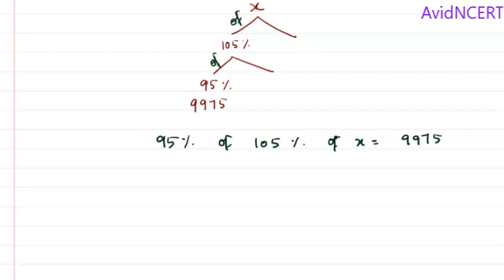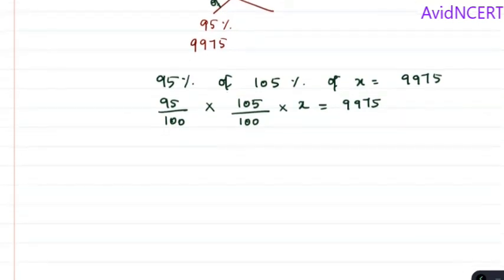So simplifying this, we need to say this percentage which is 95 by 100 times and 105% which is 105 by 100 times X equals 9975. So keeping X on one side which equals 9975, 95 by 100 goes on the other side becomes 100 by 95, and 105 by 100 becomes 100 by 105.